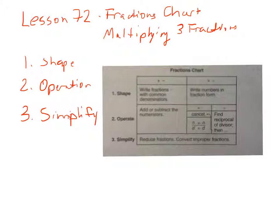You operate here—you add or subtract. And here, you can divide, or when multiplying, we cancel first. So we look for diagonal ones like we've done in the past. And finally, we reduce the fractions. So those are the three things that we need to do.